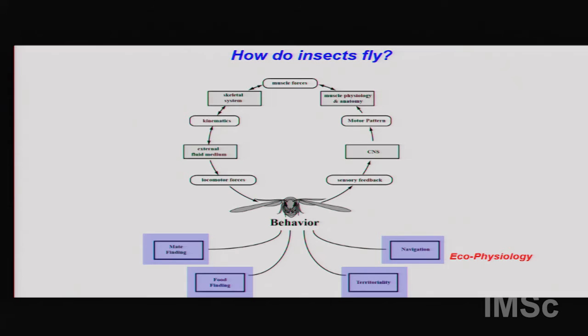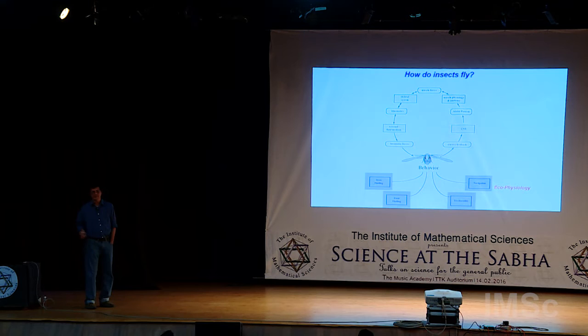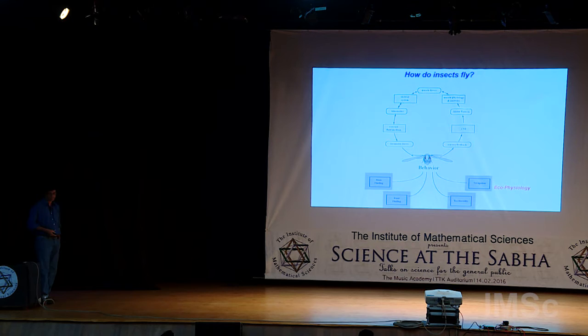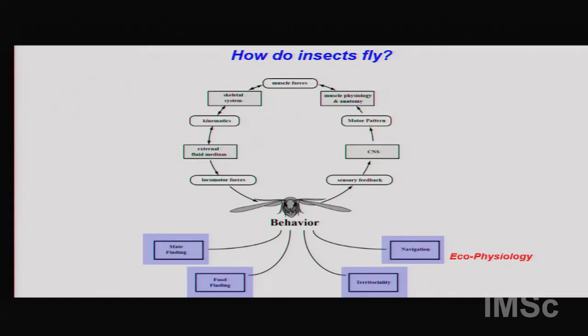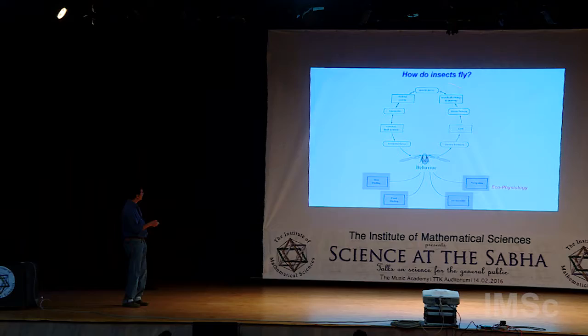And then there's navigation — something we in the subcontinent are extremely lucky to witness, because we see examples of both short-distance and long-distance migrations. There are dragonflies that go from India all the way to Africa — single dragonflies making that journey. It's pretty amazing that they're able to do this.